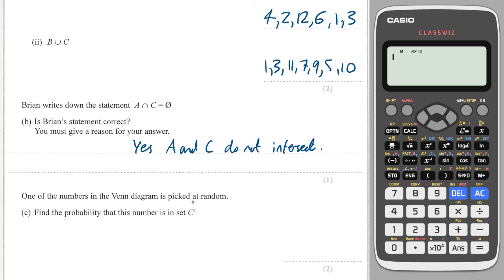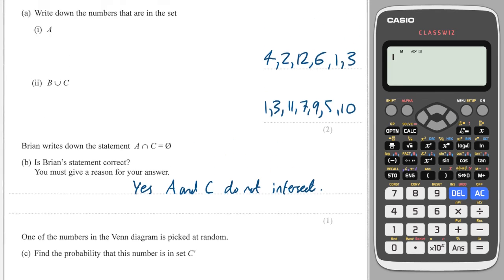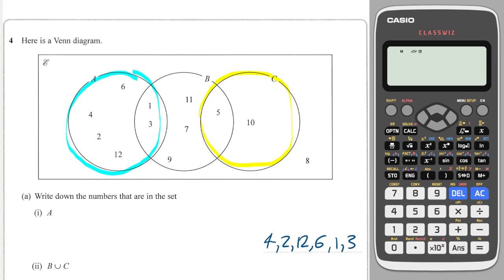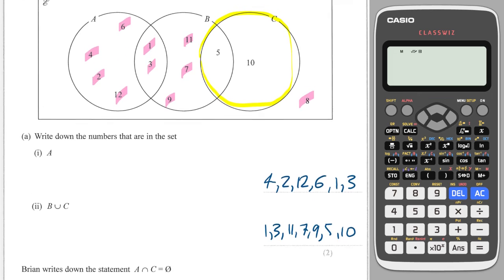And finally, it says one of the numbers in the Venn diagram is picked at random. Find the probability that it is not in C. Well, all the numbers that are not in C are 1, 2, 3, 4, 5, 6, 7, 8, 9, 10. There are 10 numbers not in C. And in total, there are 2 numbers in C. So therefore, it is 10 out of 12.